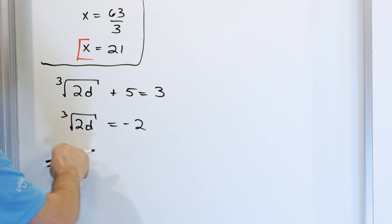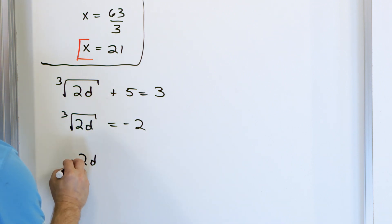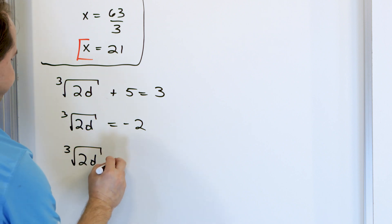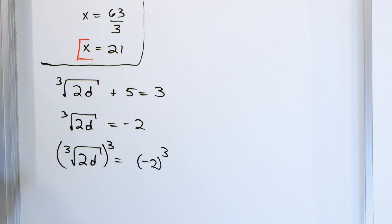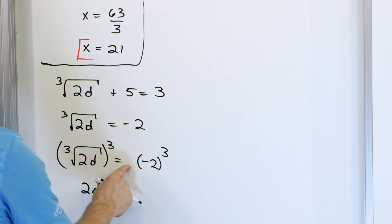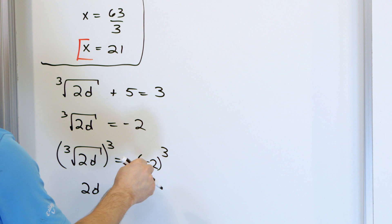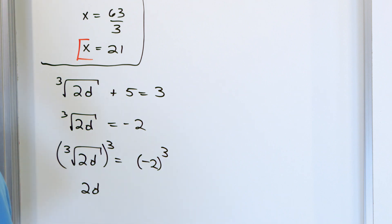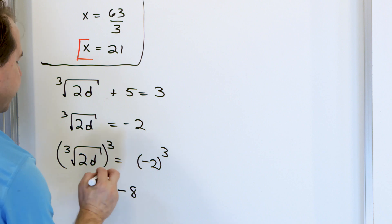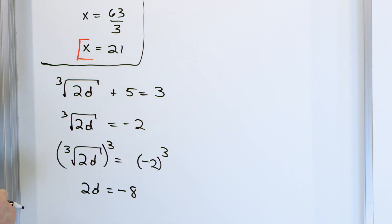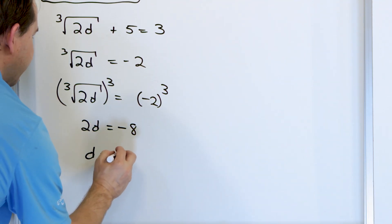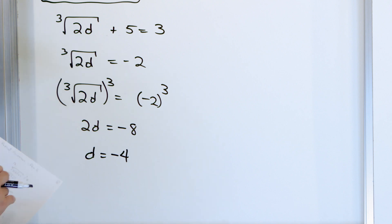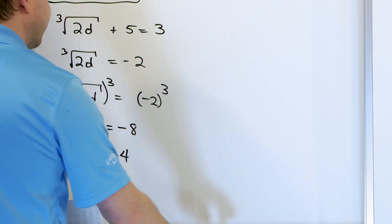How do we undo a cube root? We have to cube both sides. So we cube the left and cube the right. The cube and the cube root cancel, giving us 2 times d on the left. On the right, we have negative 2 times negative 2 times negative 2. You should be able to convince yourself that's actually going to be negative 8, because when you're cubing something negative, it's always going to be a negative answer. Then d will be negative 8 divided by 2, which is going to be negative 4. We only got one answer, so it should be correct.